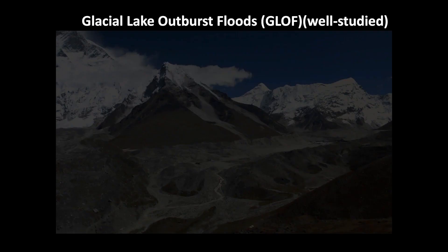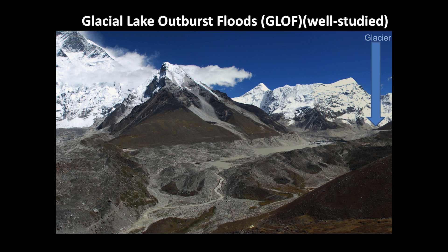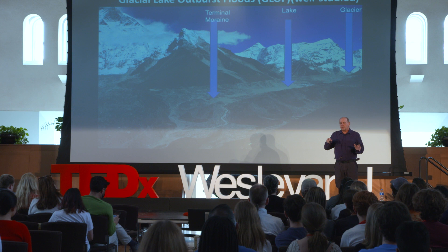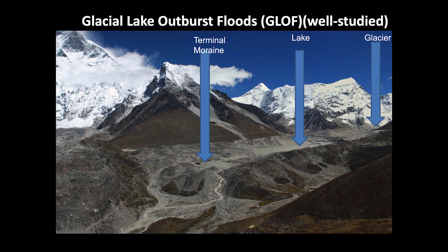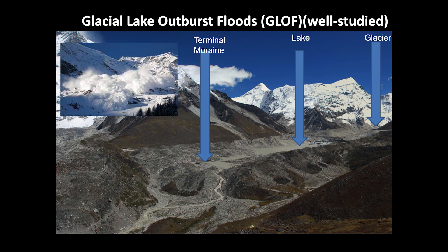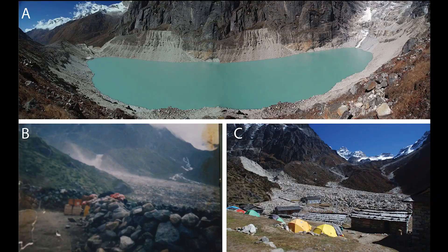How do these GLOFs come about? There's the glacial terminus and there's the lake. That particular lake holds about 90 million cubic meters of water, and it's held in by a fragile and unconsolidated terminal moraine, which really wasn't designed to hold in that much water or that much pressure. All you need is a trigger to start a flood, and the trigger is most often an avalanche or an icefall into the lake, which creates a surge wave that then breaches that fragile terminal moraine. Then you unleash millions of cubic meters of water.